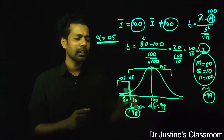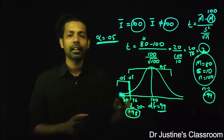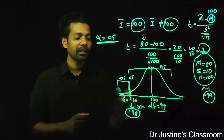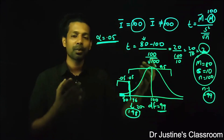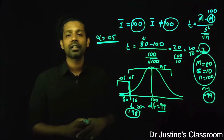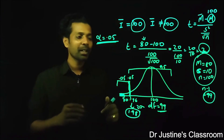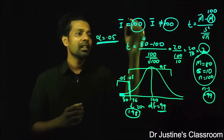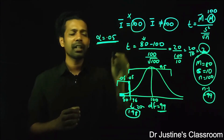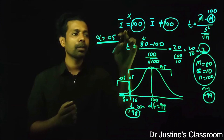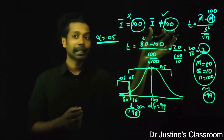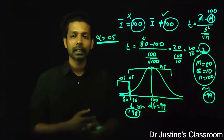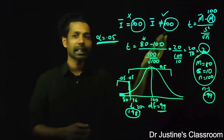I think that 80 is significantly lesser than 100, so this sample really doesn't belong to a population where 100 is the average intelligence. My judgment could be wrong — I don't have enough evidence to support this. It's a two-tailed test, so both areas will be taken into consideration.